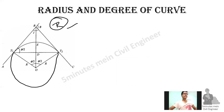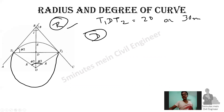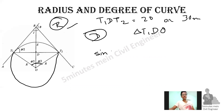Now we go to the degree of the curve. The degree is defined using points T1, D, T2. This is a chord of a given length — a chord length. The radius gives the direction of the curve, which is the radius of the curve.